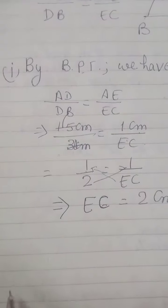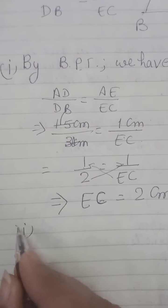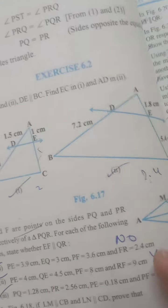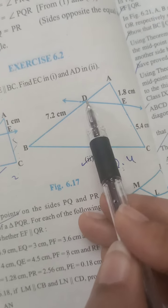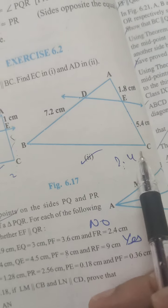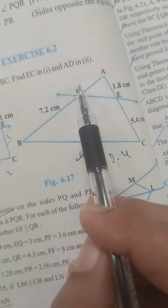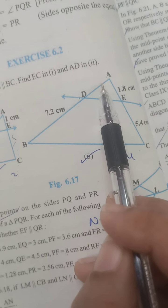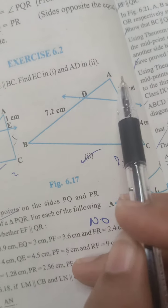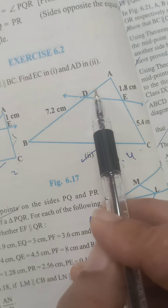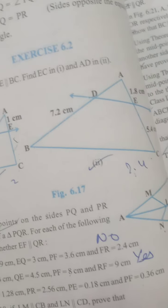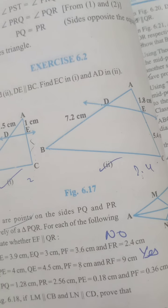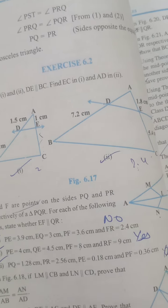This was our first part. Similarly, you can do the second part as homework — there is no difficulty. In the second part, you have to find AD using AD upon DB is equal to AE upon EC, and you will get the value of AD. Now moving forward to the next question.